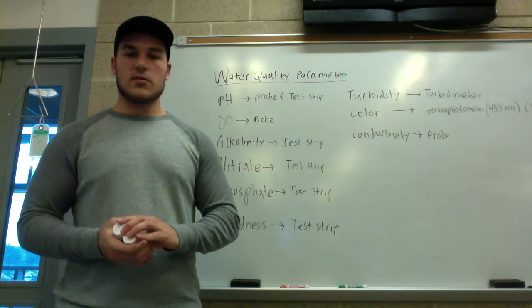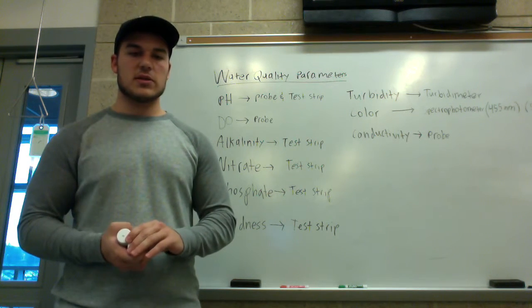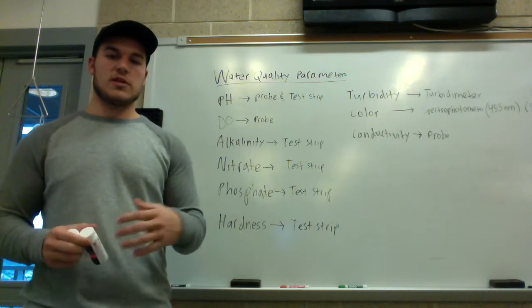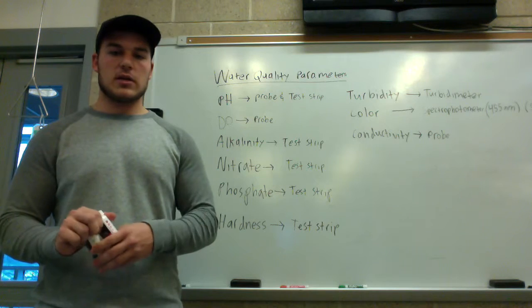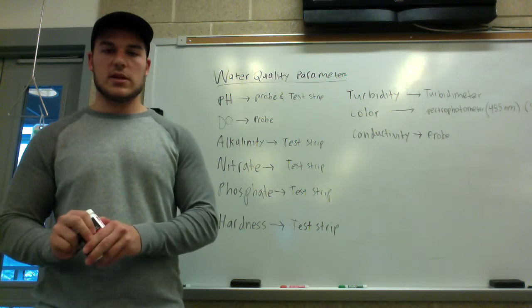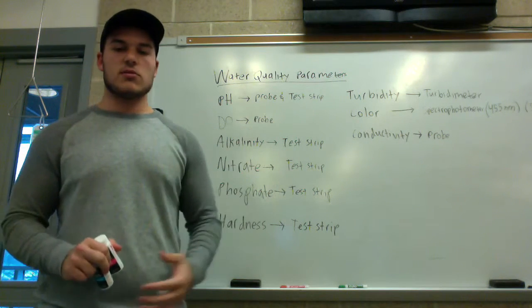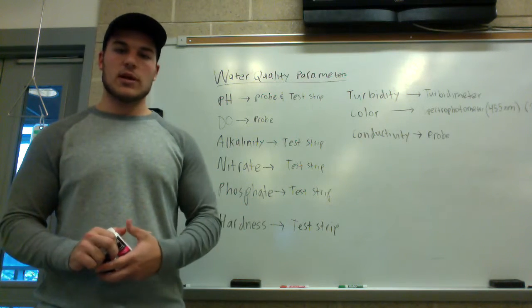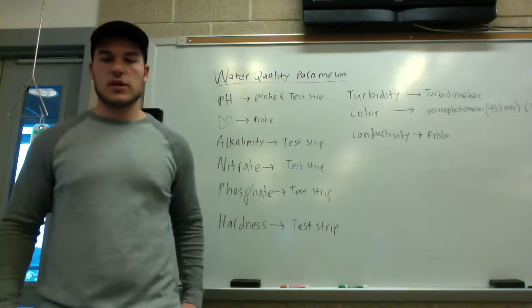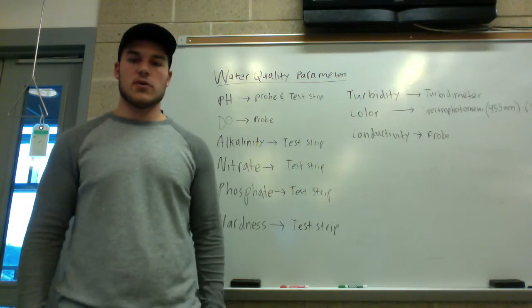You want algae growth to be low in water samples because when they decompose, a process called eutrophication takes place. Eutrophication means the system is losing a lot of dissolved oxygen in the water, which will kill off aquatic life. The units for nitrate and phosphate testing are parts per million.